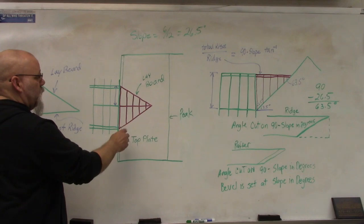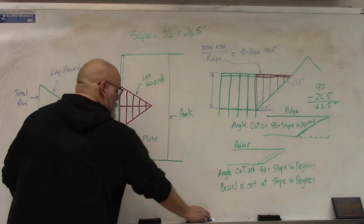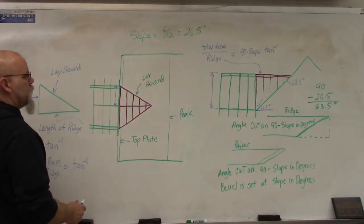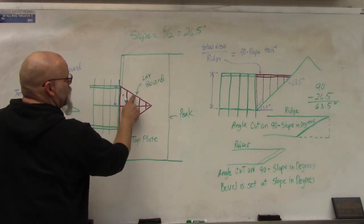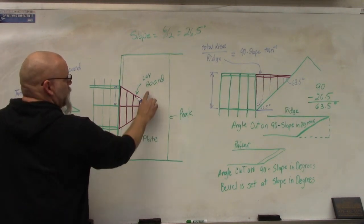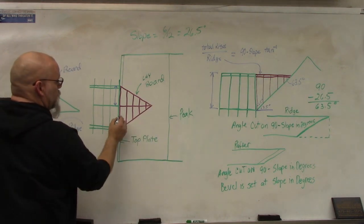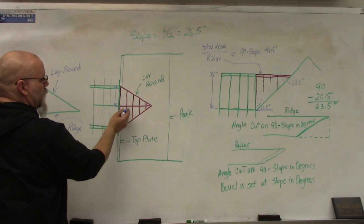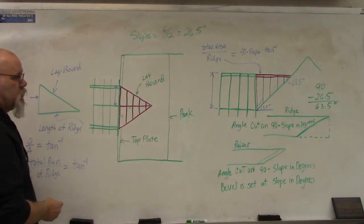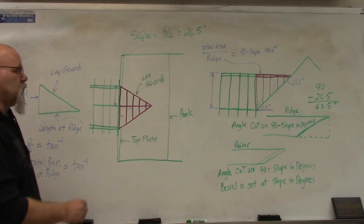First, let's identify some of the boards. This board right here and this one right here are called lay boards. These of course are your rafters, and that of course would be your ridge board.